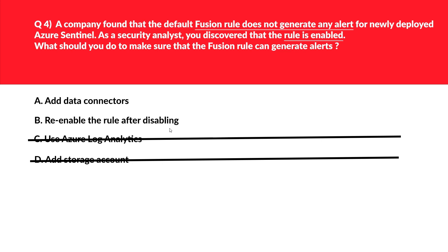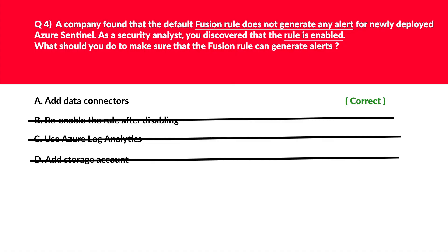As per the question, the rule is already enabled. Just like if a bulb is 10 watts and you switch it off then on again, it won't change the wattage. Similarly, re-enabling the rule won't make any difference as it's not the root cause. If you look at option A, it says add data connectors. By default, fusion is enabled; in order to generate the alert, a data connector should be configured. That brings us to the answer — option A — and we'll lock this.